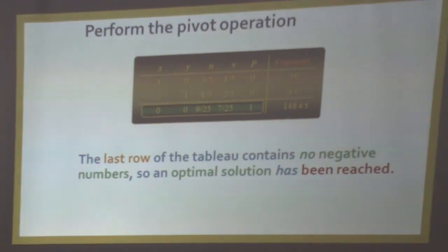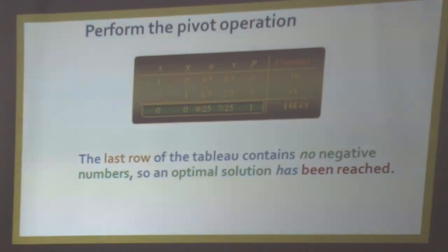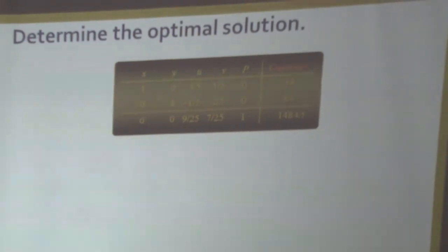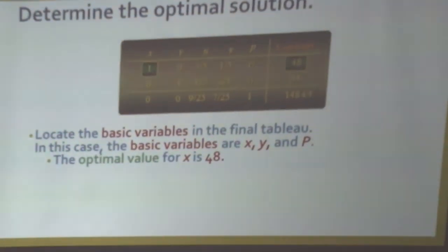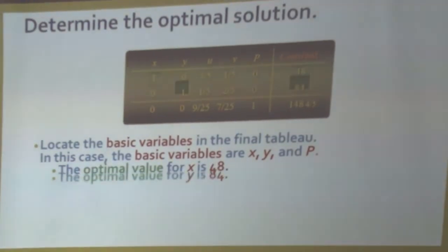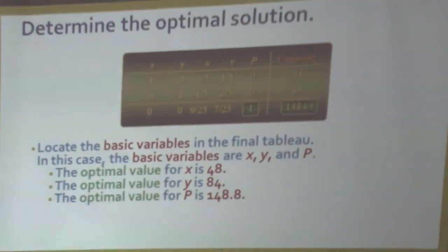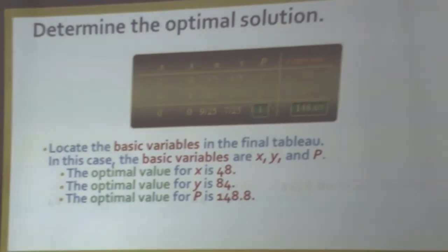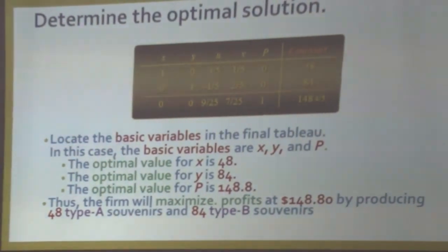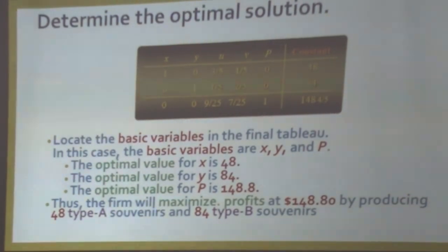Check whether the entries of the last row are positive or not. The last row now contains no negative numbers, so an optimal solution has been reached. Locate the basic variables in the final table — in this case X, Y, and P. The optimal value for X is 48, for Y is 84, and for P is 148.8. Thus, the firm will maximize its profit at $148.80 by producing 48 Type A souvenirs and 84 Type B souvenirs.